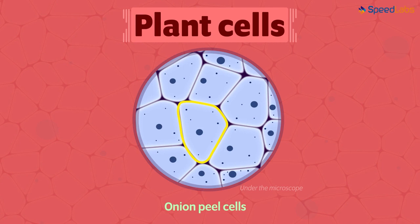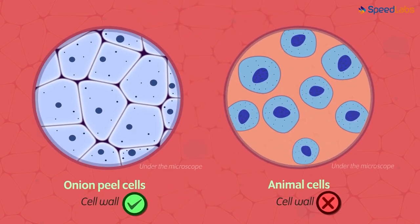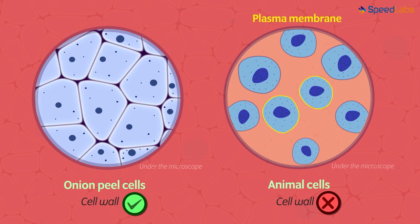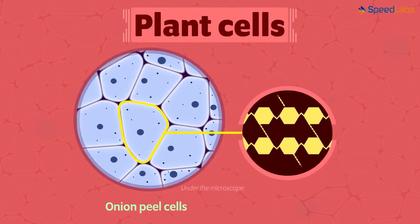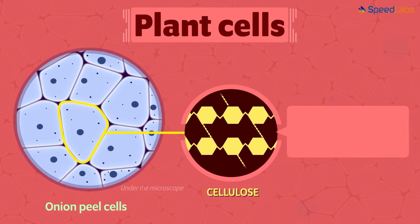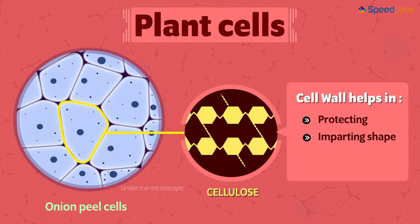Now let's move ahead to know about the cell wall. Do you think all cells have cell walls? The answer is no, because animal cells do not have cell walls — an animal cell only has the plasma membrane. The cell wall acts as a protector for plant cells. It is composed of a non-living rigid structure called cellulose. It not only acts as a protector, but also gives a proper shape to the plant cells, helps in cell-to-cell interactions, and provides a barrier to undesirable macromolecules. Clearly, the cell wall is a very important part of the plant cell structure.